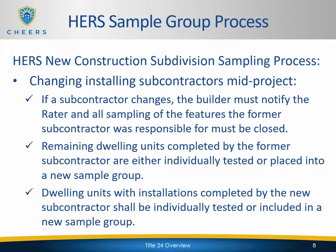If during the project there is a change in the subcontractor for one of the HERS measures, the builder must notify the HERS rater, and all the sampling for that measure must be stopped. Any homes that the original contractor was responsible for can still be grouped together, but you cannot create new sample groups with homes from the new contractor. For the new contractor, you will need to start new sample groups with those homes. You do not need to do new model testing — model testing only happens once at the very beginning — but you will need to start new sample groups.